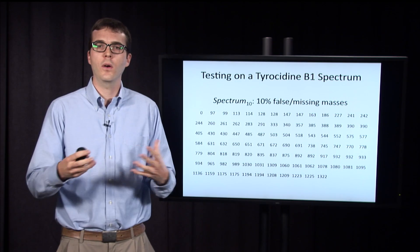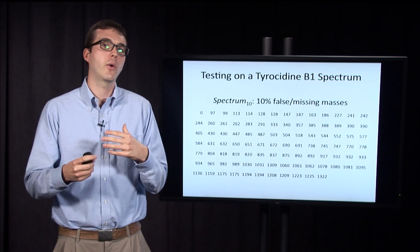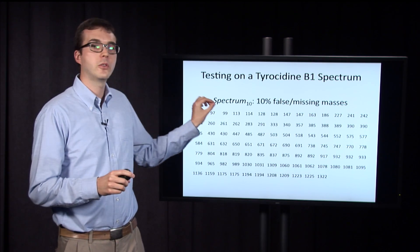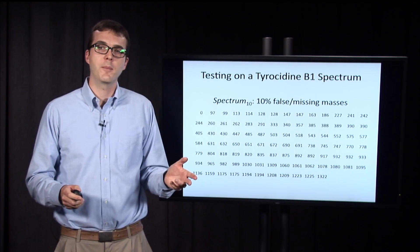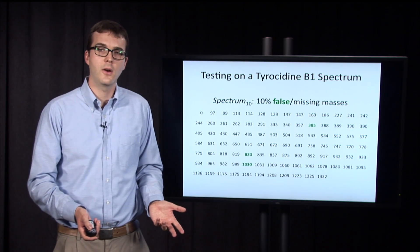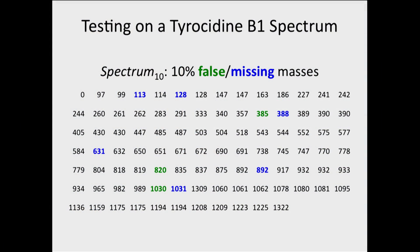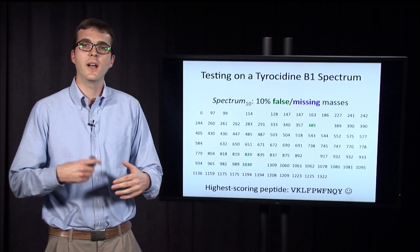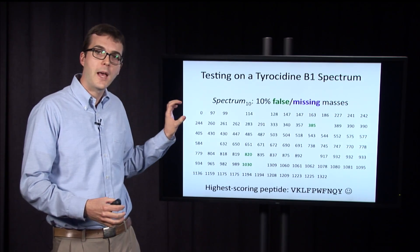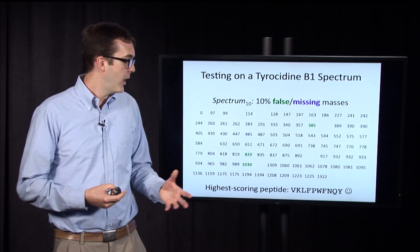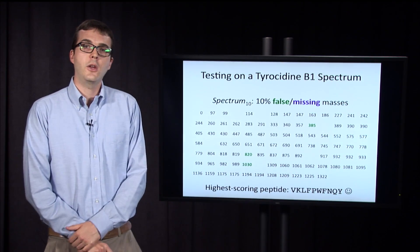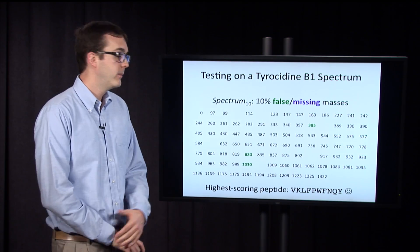Let's test it, because we're considering how well these algorithms work in practice. Here is a hypothetical spectrum with 10% false and missing masses. I'll highlight where the false and missing masses are — here are the false masses, and here are the missing masses. We're not going to know which of these are false and missing to begin with, and in particular we won't have the missing masses present. When we run our leaderboard algorithm on this hypothetical dataset, it returns the correct tyrosidine B1 peptide.